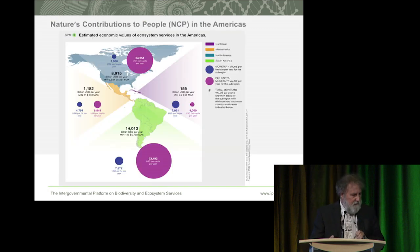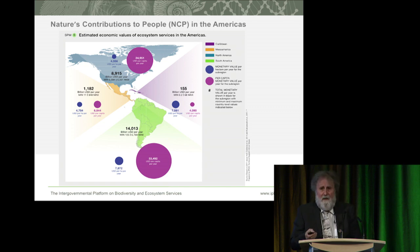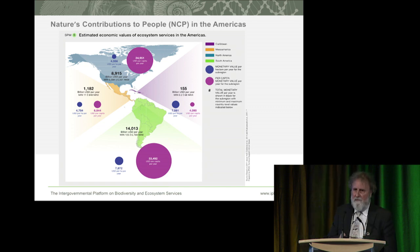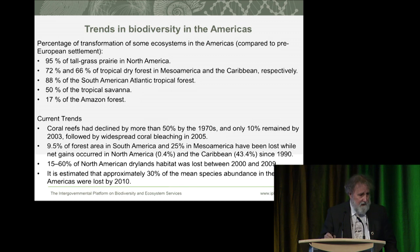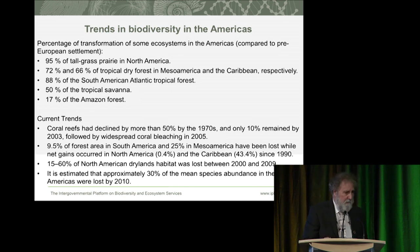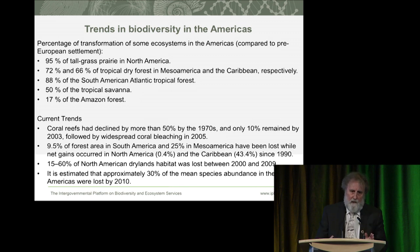For the Americas, they estimated that the annual value of nature's contribution equals the GDP of the Americas. That could be wrong by a factor of two or even five — it would still be important. In the Americas, we've lost 95% of tall outgrass prairies, 50% of tropical savannas, and only 10% of coral reefs remained by 2003. 9.5% of forest areas in South America and 25% in Mesopotamia have been lost in recent times. So we've not only got long-term changes in biodiversity — we're still destroying it today.